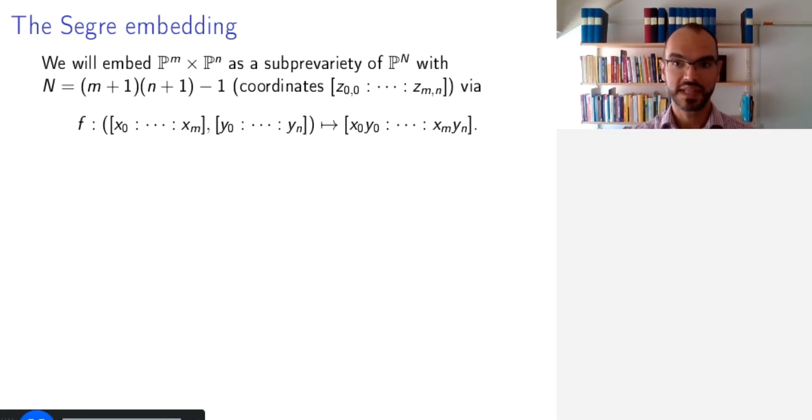The embedding itself will go as follows. To a pair X in P^M and Y in P^N, we will assign the point of coordinates, the products of the X coordinates times the Y coordinates in all possible ways.